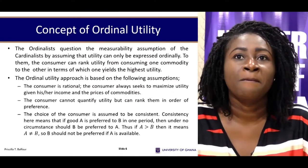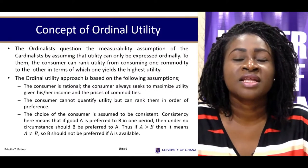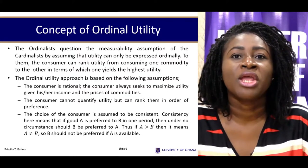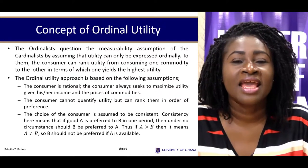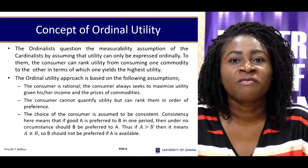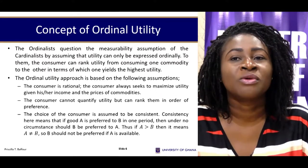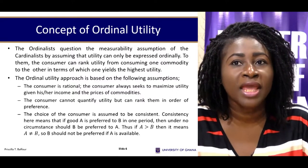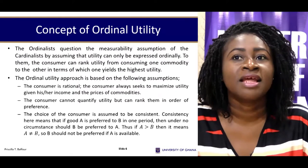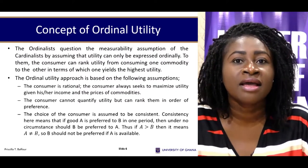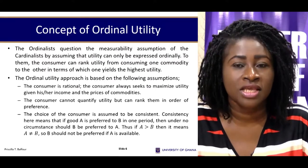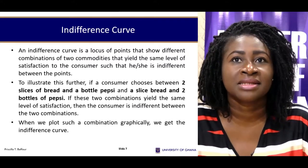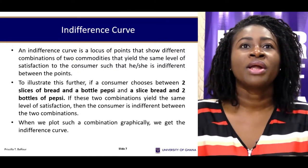Closely related to consistency is the concept of transitivity. Based on consistency of choice, we can predict what the consumer will do. With transitivity, when A is preferred to B and B is preferred to C, the consumer will under no circumstance prefer C over A. So if A is preferred to B and B is preferred to C, then A is preferred to C — meaning we can predict consumer behavior based on the patterns we observe.